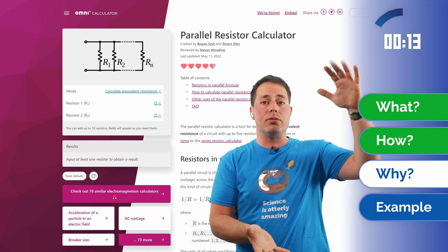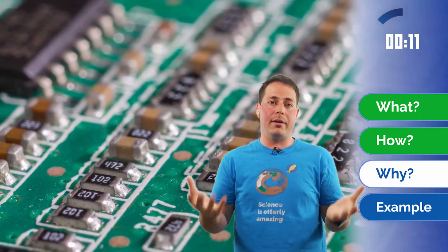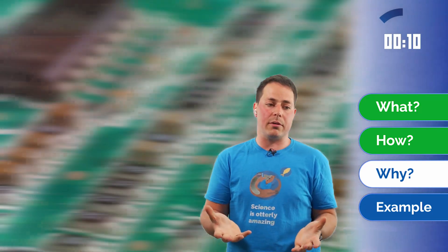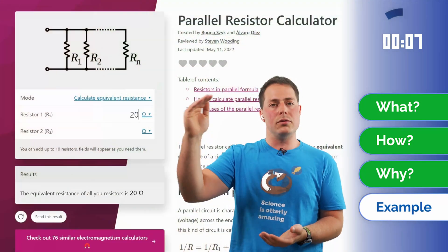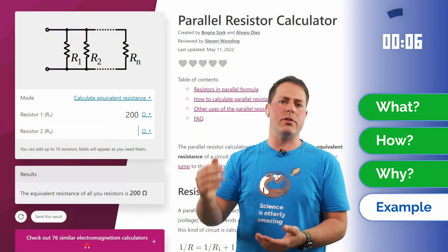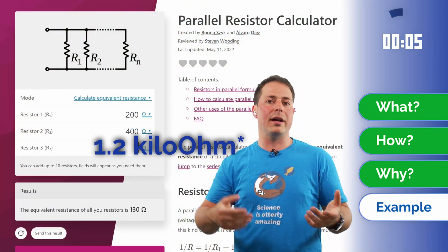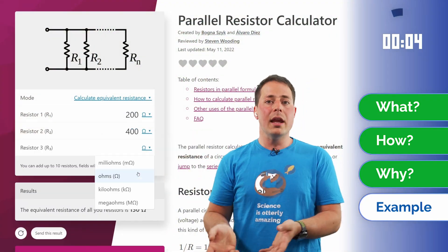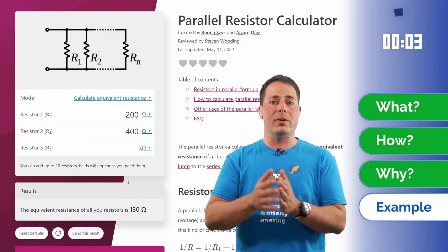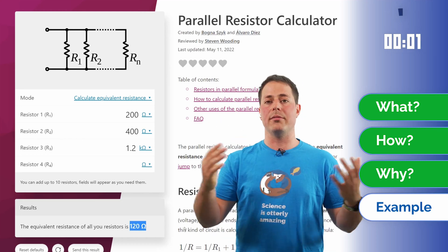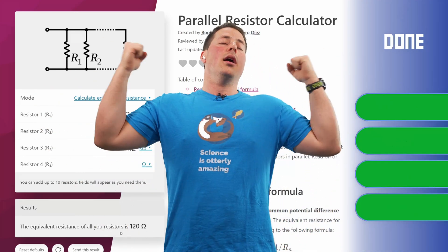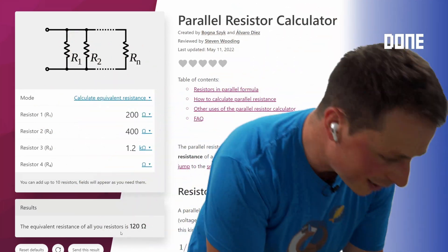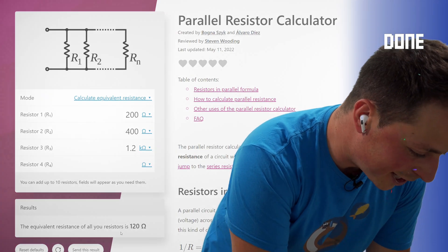The other reason is that you might want to reduce the number of components in your circuit. So for example, if you have three resistors in parallel — 200 ohm, 400 ohm, and 1.5 kilo ohm — you can combine them into a single 120 ohm resistor. Just about.